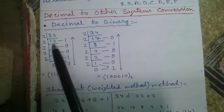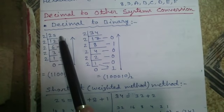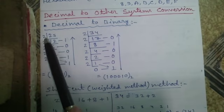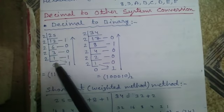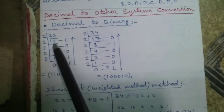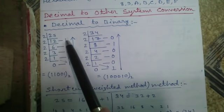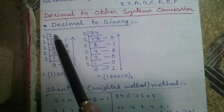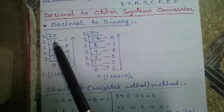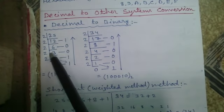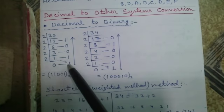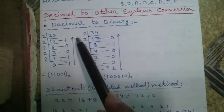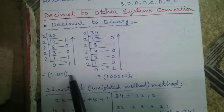This process is called the repetitive division process. We repeatedly divide our source number by our destination base — here destination base is binary, base 2 — until we get 0 at the bottom. We write the quotient at the bottom and the remainder at the right. For example: 25 ÷ 2 = quotient 12, remainder 1; 12 ÷ 2 = quotient 6, remainder 0; 6 ÷ 2 = quotient 3, remainder 0; 3 ÷ 2 = quotient 1, remainder 1; 1 ÷ 2 = quotient 0, remainder 1. Read the remainders upward — it becomes 11001 in binary.